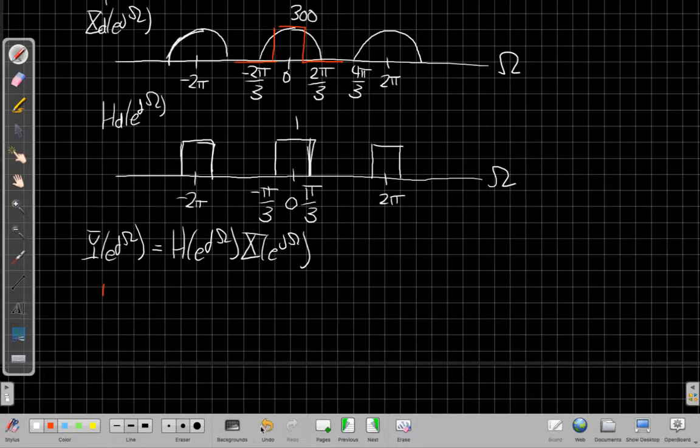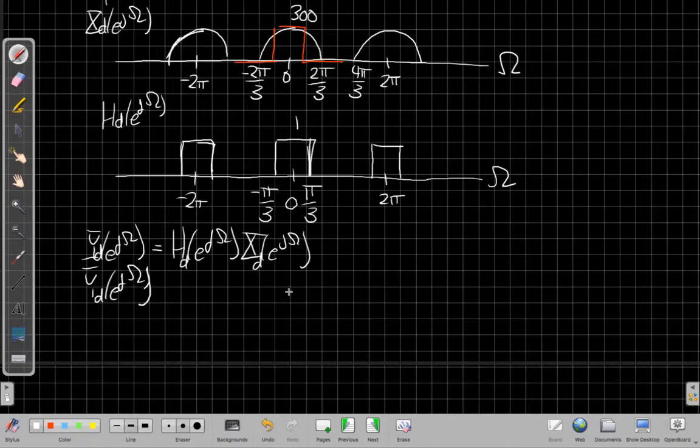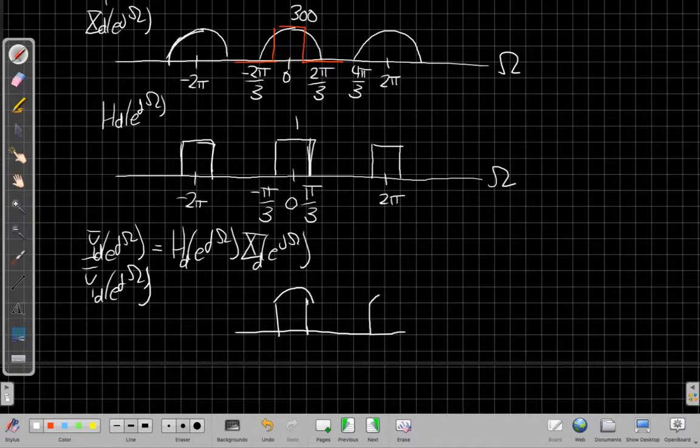Putting a little subscript d on all these to remind us, this is the discrete time part in the middle of the system. So I'd end up with something that was like an arc, but then it gets cut off part of the way down. I don't finish the rainbow. I just get little arcs in the middle.